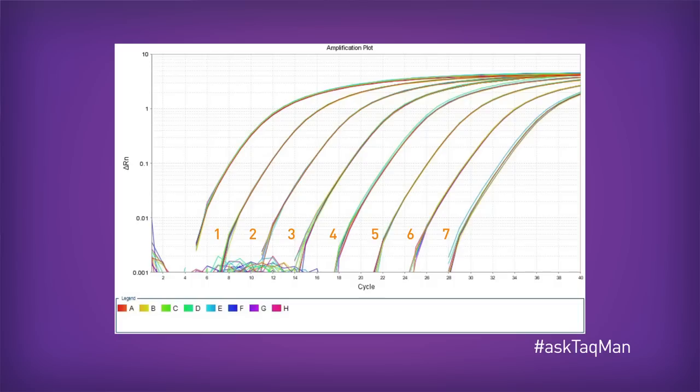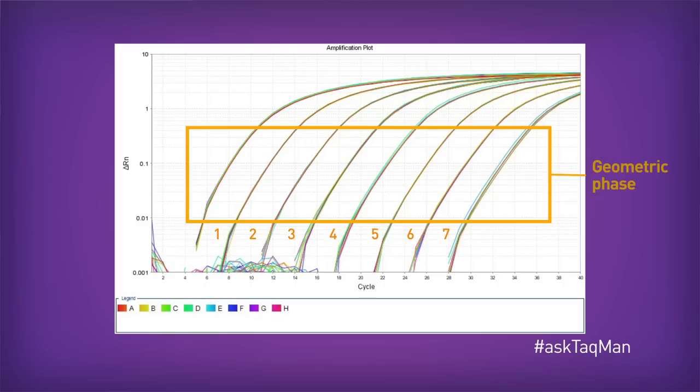What I want you to notice is this. In the geometric phase, which is approximately the area inside this box, all of the dilutions are very evenly spaced, exactly as we would expect. Also, the pipetting replicates are very tight, meaning we have excellent precision.